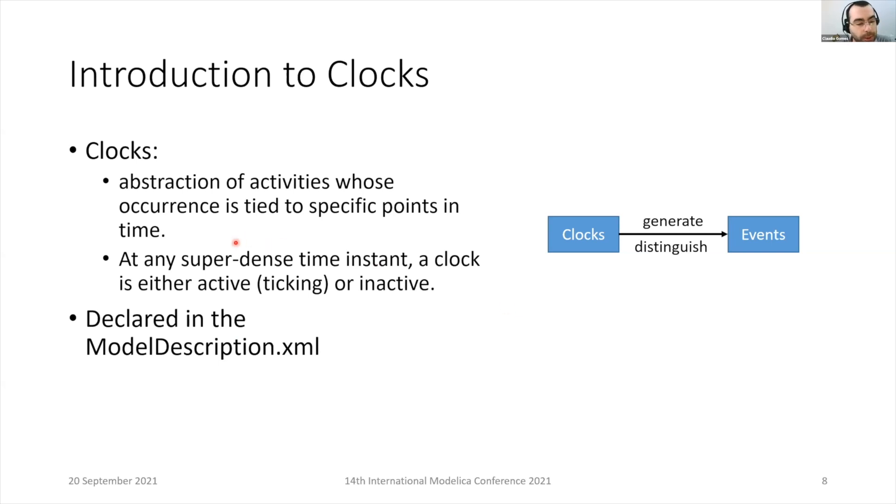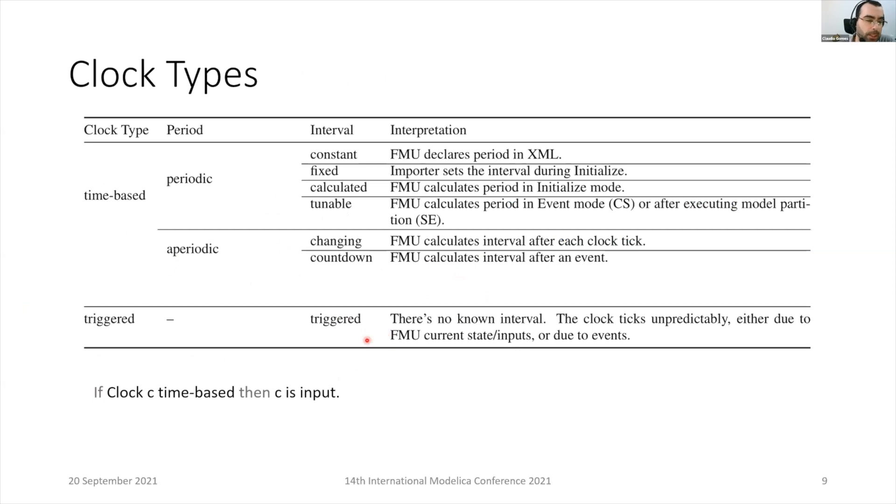A clock at any superdense time instant can either be active or inactive. These are declared like variables. These are declared in the model description, which means we can have input clocks, output clocks, and so on.